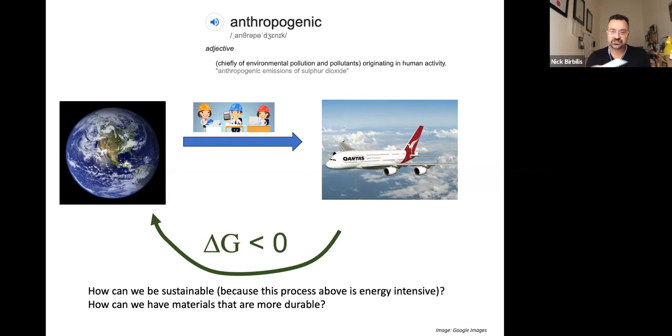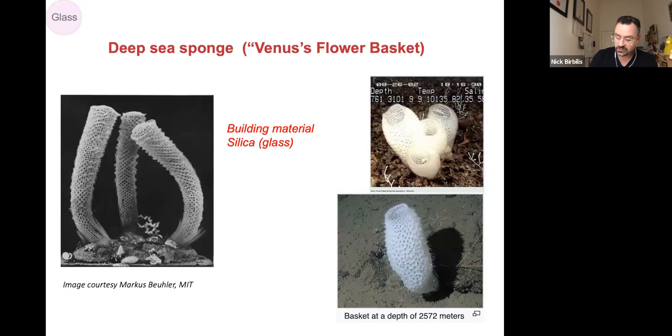So this raises a question that I wanted to just put up there before I jump into my case studies: how can we be more sustainable because this process is highly energy intensive? How can we have materials that are more durable? My first example of materials design actually picks up from Mother Nature and has a bent towards sustainability, and it's on glass.